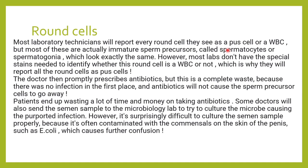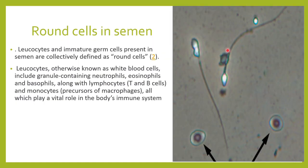All this leads to a futile exercise involving wastage of money and resources. So actually, when we say round cells in semen, we mean WBCs as well as immature germ cells. The leukocytes — that is, white blood cells — include neutrophils, lymphocytes, eosinophils, basophils, and macrophages.